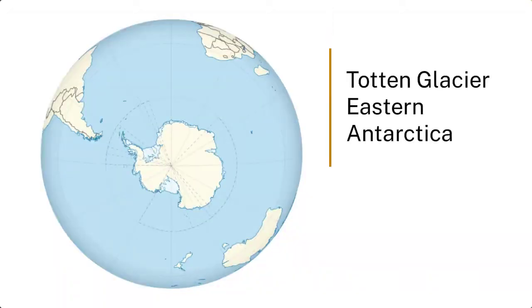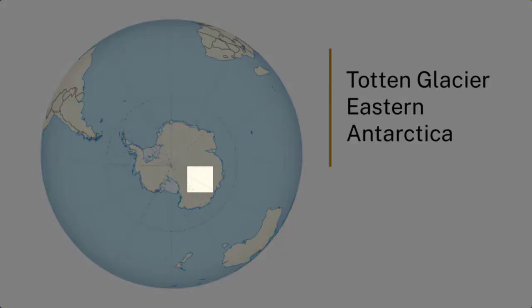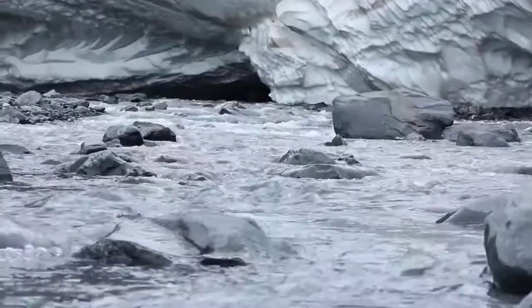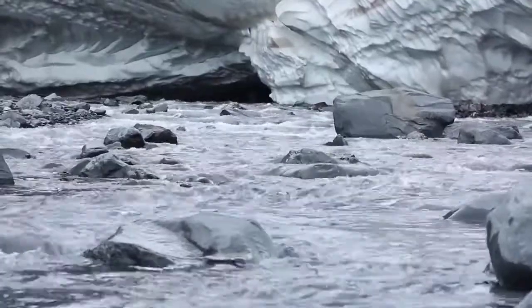One of the other interesting trends we've started to see in Antarctica is in the Totten Glacier, which is in eastern Antarctica, pretty much directly south of Australia. Since about 2013 we've seen really significant ice mass loss there — something equivalent to half a million Olympic-sized pools worth of water has melted from the ice sheet and entered the ocean.